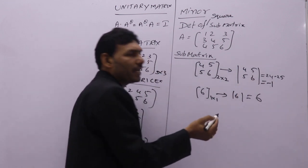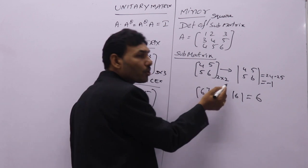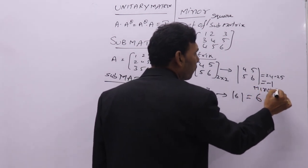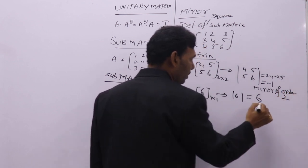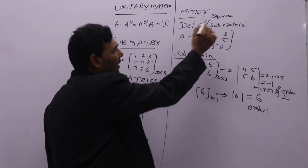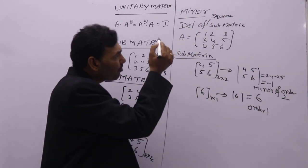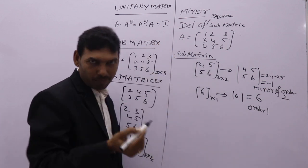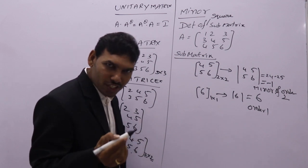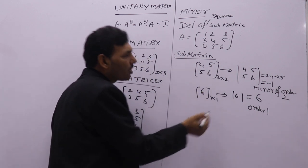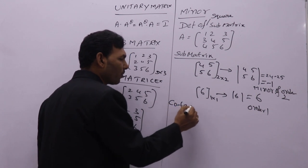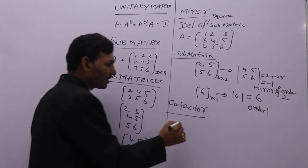These two can be differentiated by their order. Minus 1 is calculated from a 2 by 2 matrix, so minus 1 is a minor of order 2. Its order is 1. Minor means determinant of square sub-matrix. If sub-matrix order is M, its minor order is M. If sub-matrix order is 3, minor order is 3. If sub-matrix order is 2, minor order is 2. If sub-matrix order is 1, minor order is 1.